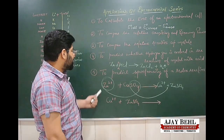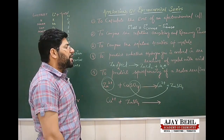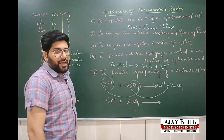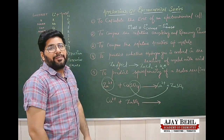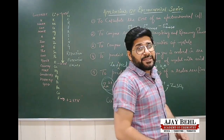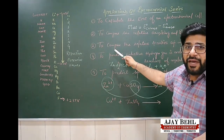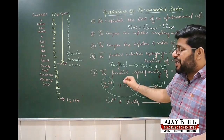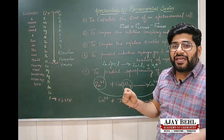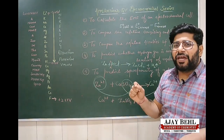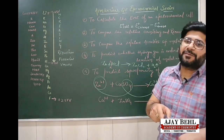The fifth application is to predict the spontaneity of a redox reaction. It is very easy to predict spontaneity using the electrochemical series: if the E⁰ of a cell is positive, the reaction will be spontaneous. If E⁰ of the cell is negative, the reaction will not be spontaneous in the forward direction but can be spontaneous in the reverse direction.